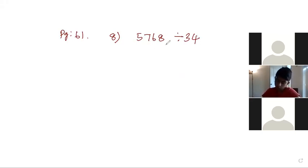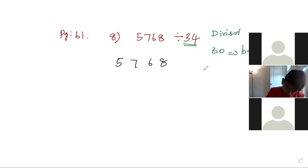So, 5,768 divided by 34. Okay, 5, 7, 6, 8. This is our divisor, 34. Our base becomes 30. 30 is base.